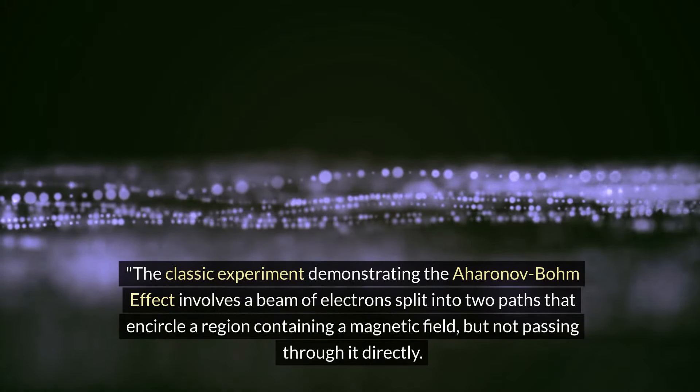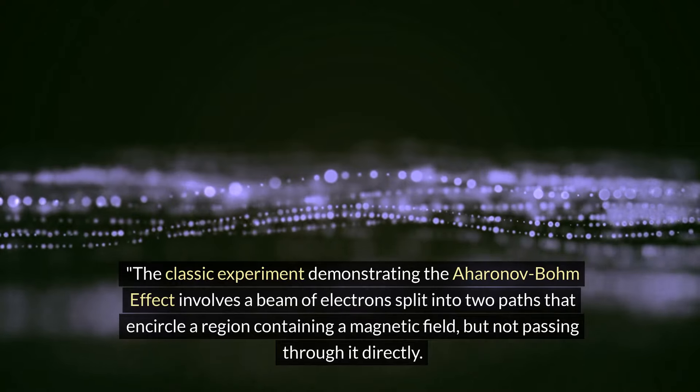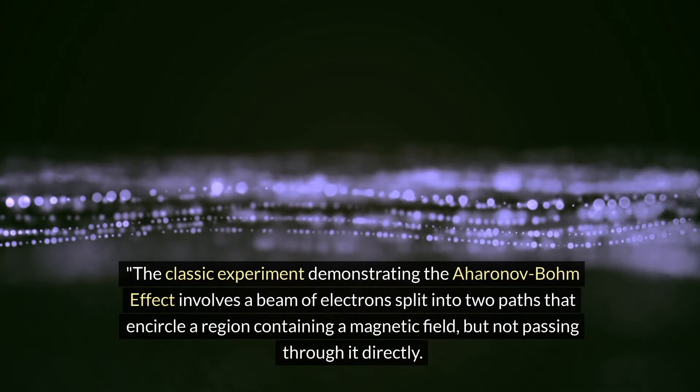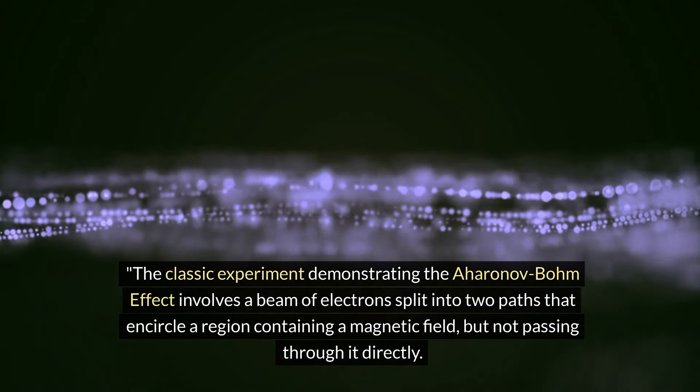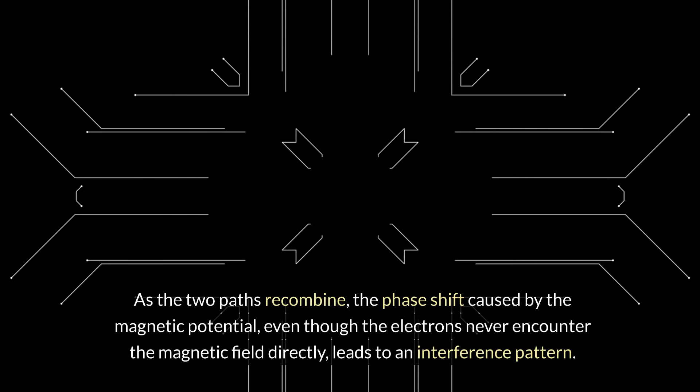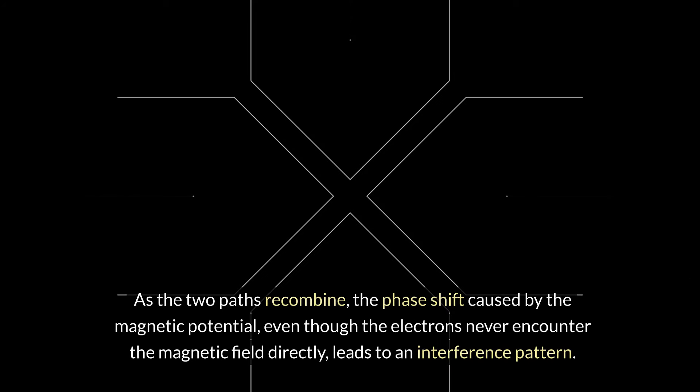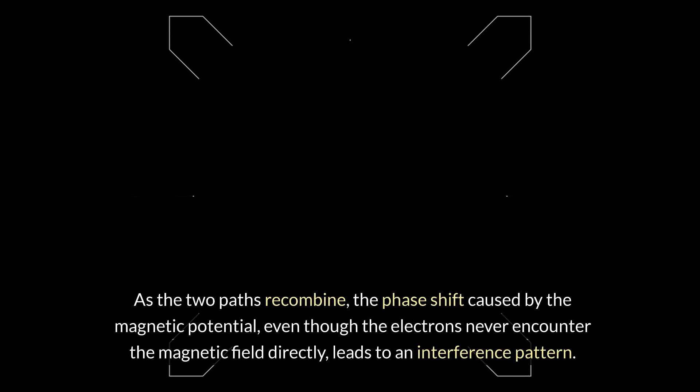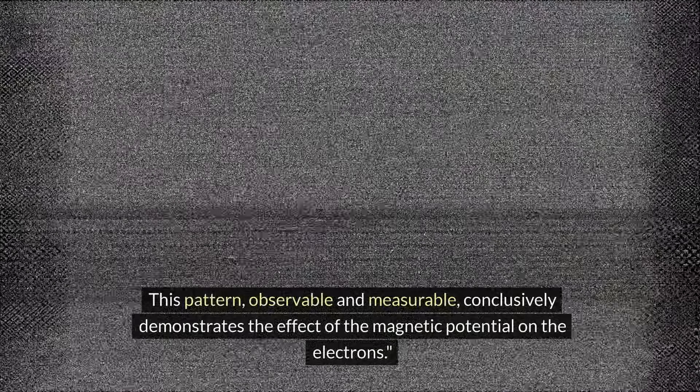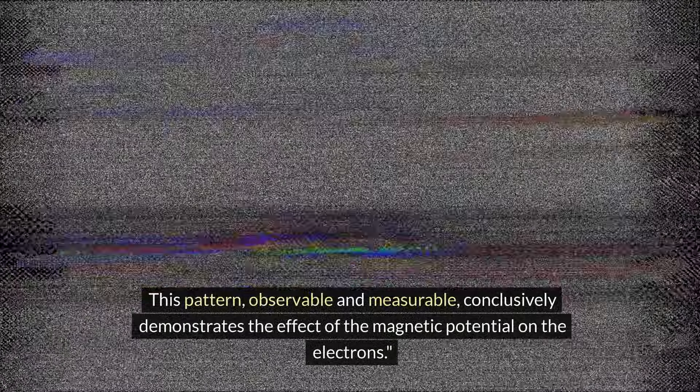The classic experiment demonstrating the Aharonov-Bohm effect involves a beam of electrons split into two paths that encircle a region containing a magnetic field, but not passing through it directly. As the two paths recombine, the phase shift caused by the magnetic potential, even though the electrons never encounter the magnetic field directly, leads to an interference pattern. This pattern, observable and measurable, conclusively demonstrates the effect of the magnetic potential on the electrons.